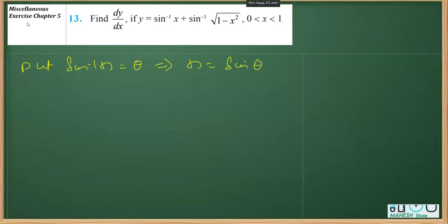If I do so, we have y equals, I am going to replace this sin inverse x with theta plus, this is sin inverse square root 1 minus x squared, so x is sin theta, 1 minus sin squared theta.